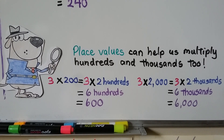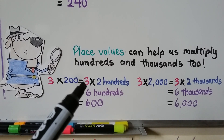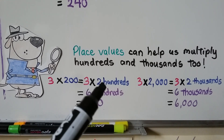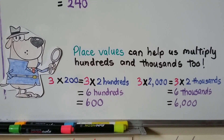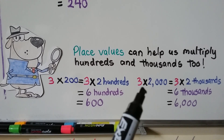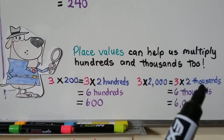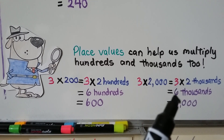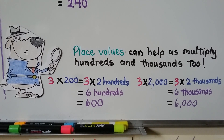Place value can help us multiply hundreds and thousands too. If we had 3 times 200, it's equal to 3 times 2 hundreds. The basic fact is 3 times 2, which is 6, so we have 6 hundreds — that's equal to 600. Here we have 3 times 2,000, equal to 3 times 2 thousands. The basic fact is 3 times 2, which is 6, so we have 6 thousands, which is equal to 6,000.